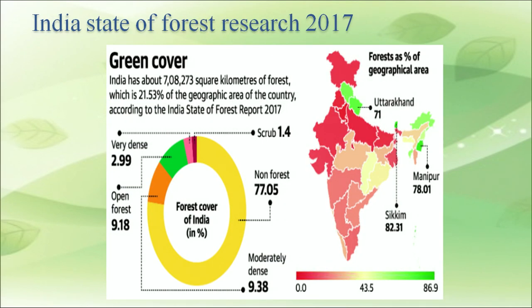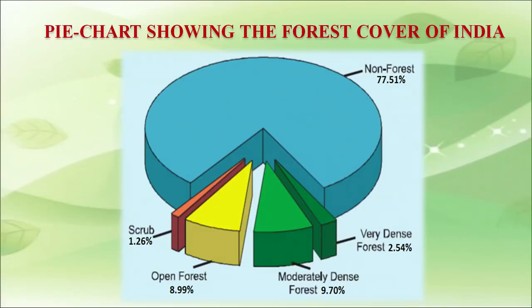India has about 7,08,273 square kilometers of forest, which is 21.53 percent of the geographic area of the country, according to the India State of Forest Report 2017. There is enough evidence to show that dense forests are covered in India. The variety and distribution of forest vegetation is large. Indian forest types include tropical evergreen, tropical deciduous, temperate, coniferous, swamp, mangrove, etc.